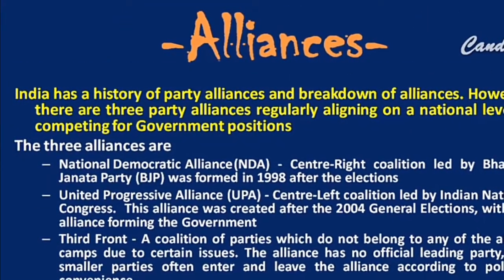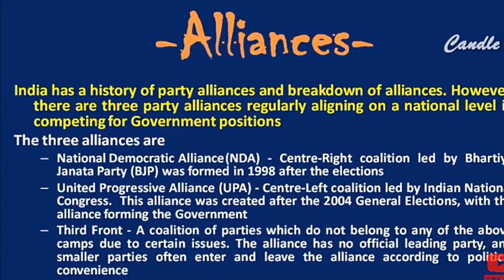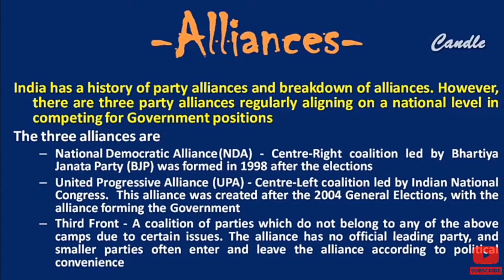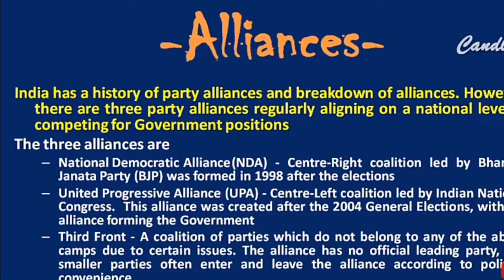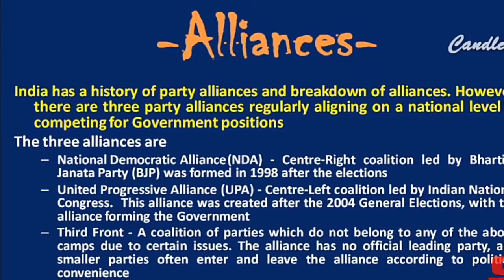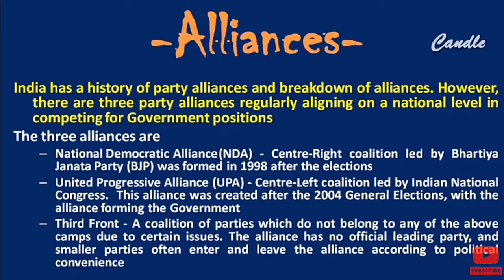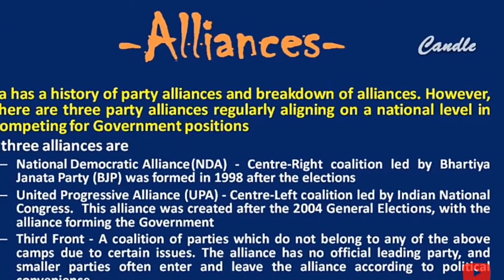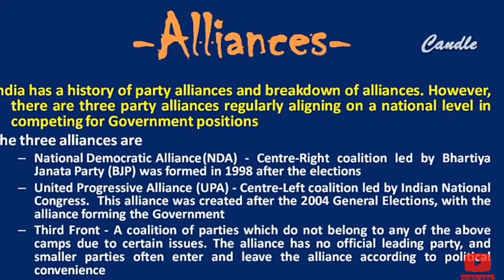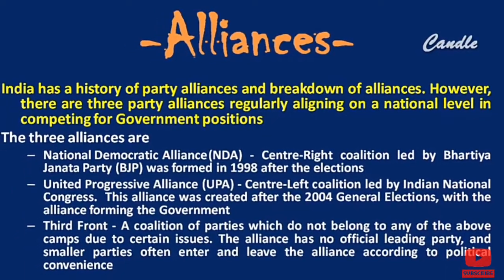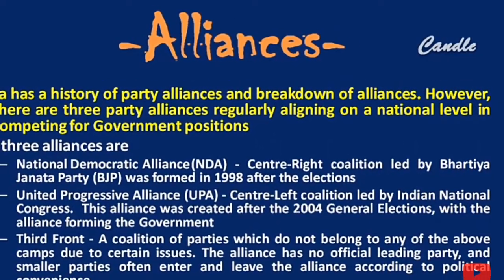These are: NDA, that is National Democratic Alliance, formed by BJP and its allies. Then the United Progressive Alliance, or UPA, which was led by the Congress and its allies. The third one is the Left Front, which is formed by the Communist parties like CPI and CPIM.